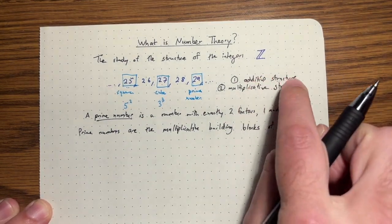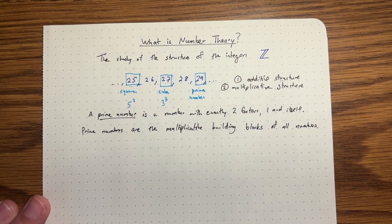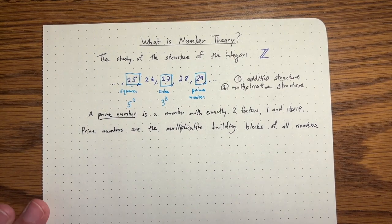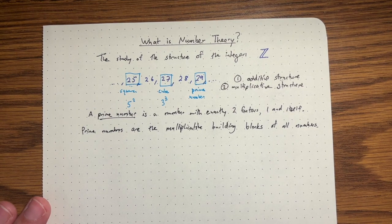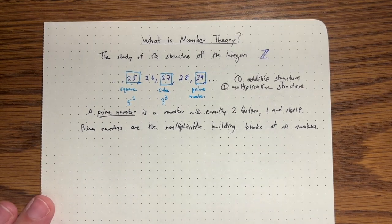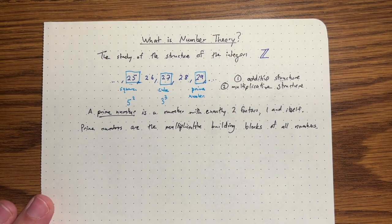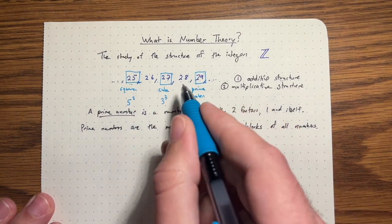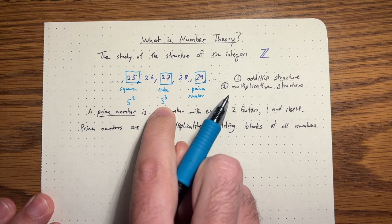If we think about the additive building blocks, it would really just be the number one. You start with zero, and then you add a bunch of ones you can get to any number you want. The multiplicative building blocks are the primes. You can factor any number as a product of primes. You can try this with these other numbers, too. We already did it with 25 and 27.